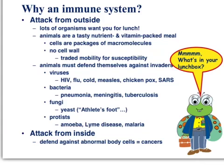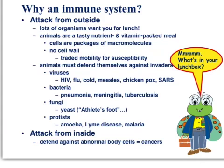We also have parts and pieces on our insides that may potentially decide to attack us in the form of cancers. We could sit down and list names of things that would cause us harm, but instead we give them a general name called a pathogen. A pathogen is any agent — anything that will cause a disease that can infect a wide range of animals including humans. Our immune system is built on its ability to recognize foreign particles — things not made by our own body — and when that happens it generates a response.